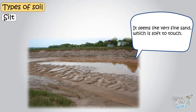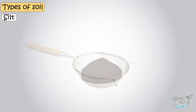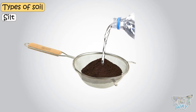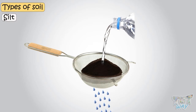Now, put some silt in a strainer and pour water on it. Water will drain through the silt slowly, as compared to sand. So silt holds some water, and water drains through silt more slowly than through sand.